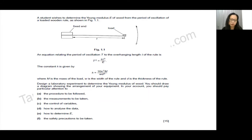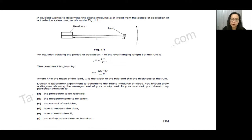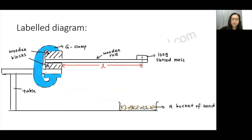Sometimes you might not write in a way that the examiner can understand, so the diagram will help the examiner understand what you wrote. I would suggest drawing a labelled diagram showing the arrangement of your equipment. In your account, pay particular attention to the procedure, the measurements to be taken, the control variables, how to analyse the data, how to determine E (Young's modulus), and the safety precautions. That gives you 15 marks in total. I have already drawn my labelled diagram — I use a G-clamp to clamp two wooden blocks, with the wooden ruler sandwiched between them.